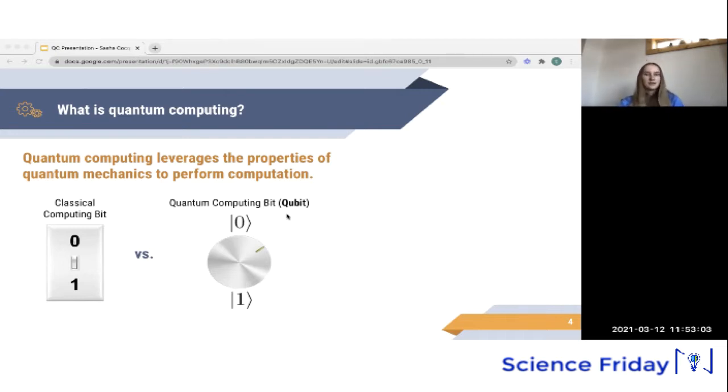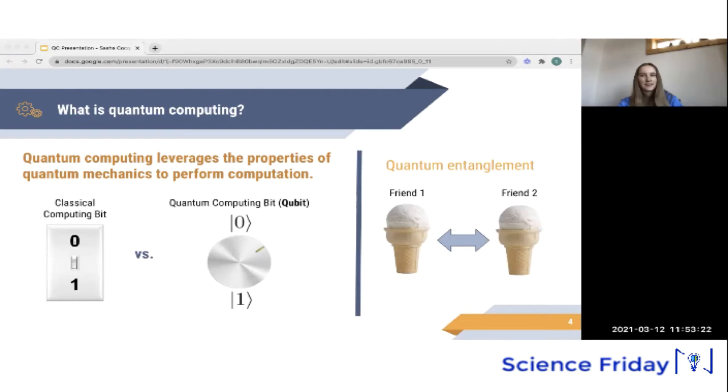Another property of quantum mechanics is entanglement, which says that if two qubits are entangled, if you know certain information about one qubit, you automatically know certain information about the other. So that was a bit wordy. So as a classical analogy, if two friends are entangled and you learn that friend one prefers vanilla ice cream over chocolate, you may immediately know that friend two also prefers vanilla. And this is regardless of how far apart the friends are.